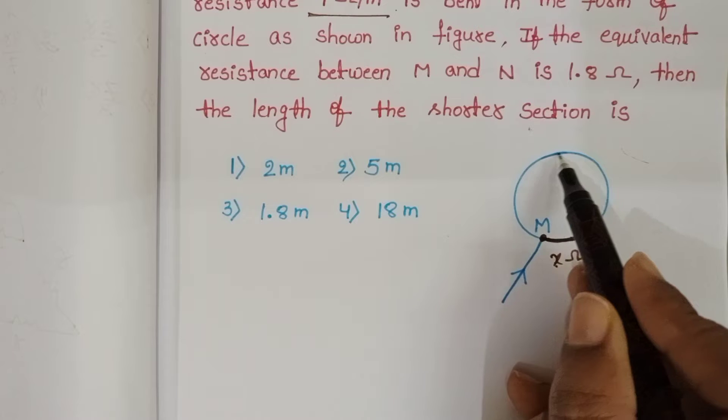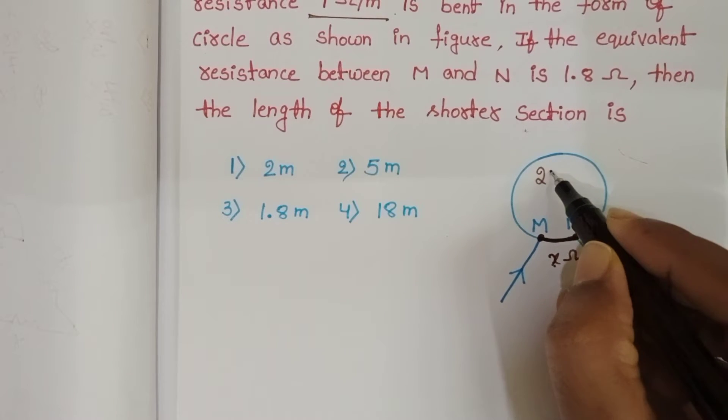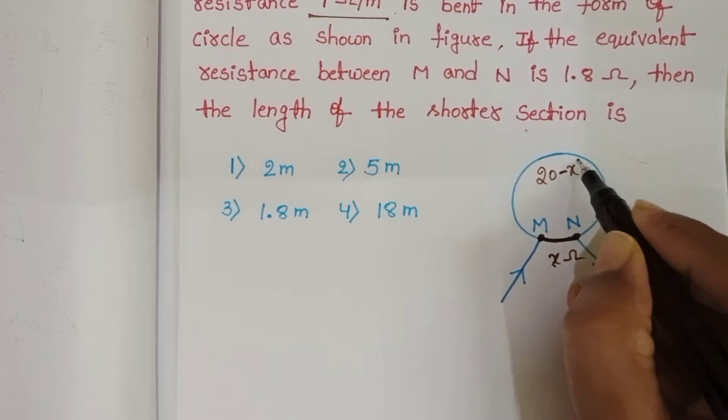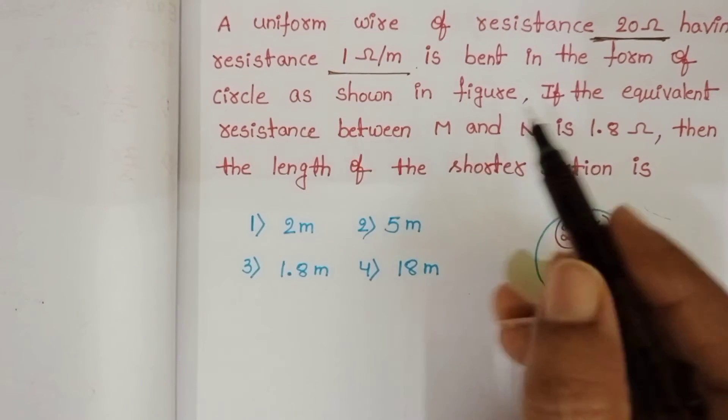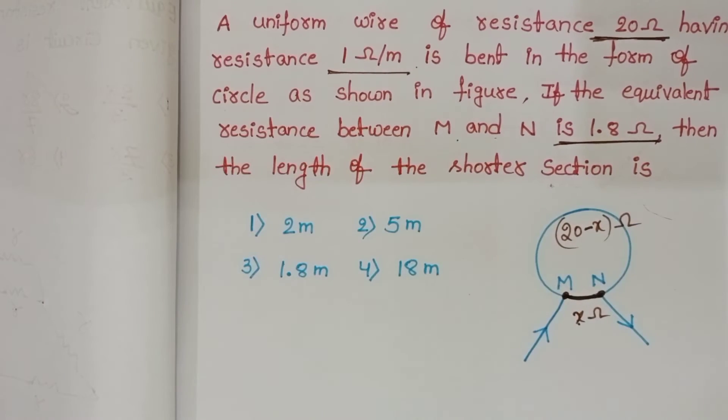So the remaining part resistance becomes 20 minus X ohm. The resistance between M and N is 1.8 ohm.